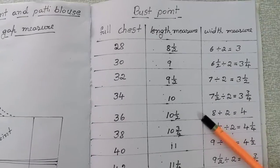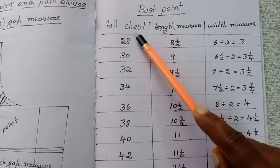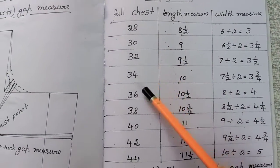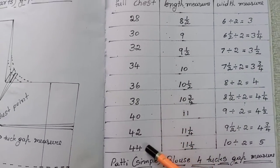The full chest is 28, 30, 32, 34, 36, 38, 40, 42, 44.